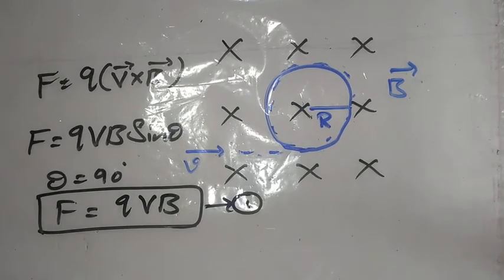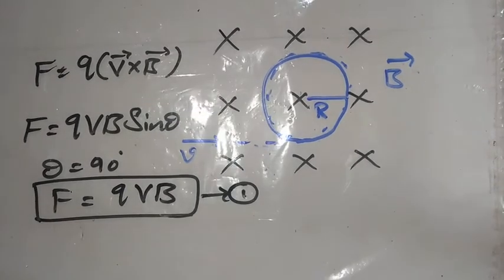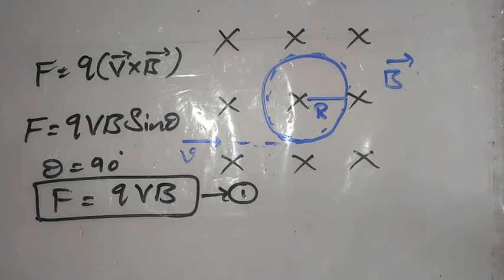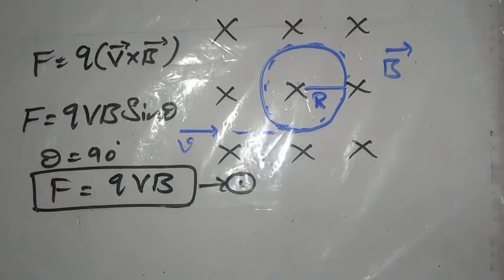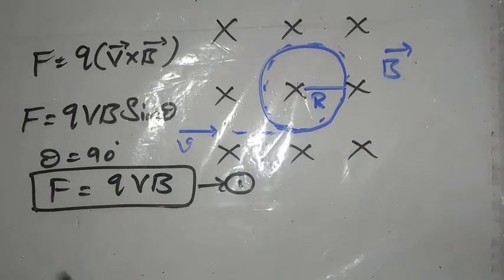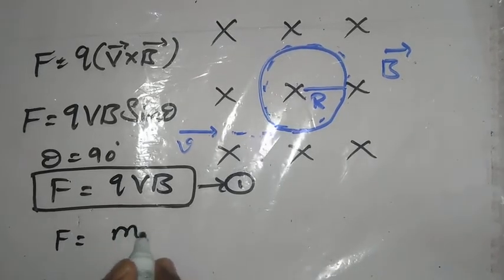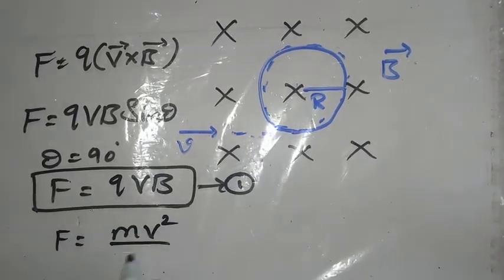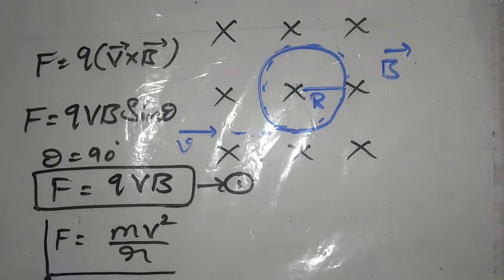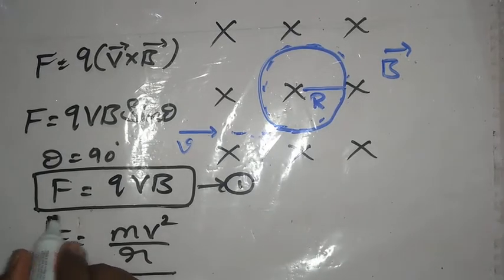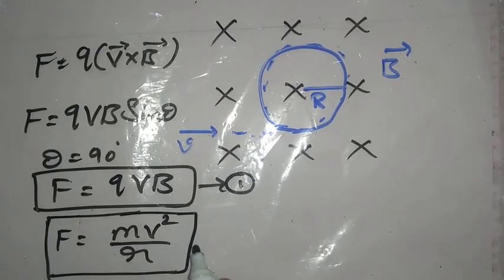This force provides the centripetal force for the charged particle. The centripetal force on the charged particle of mass M, moving in a circular path of radius R, is given by F = MV²/R. This is Equation 2.